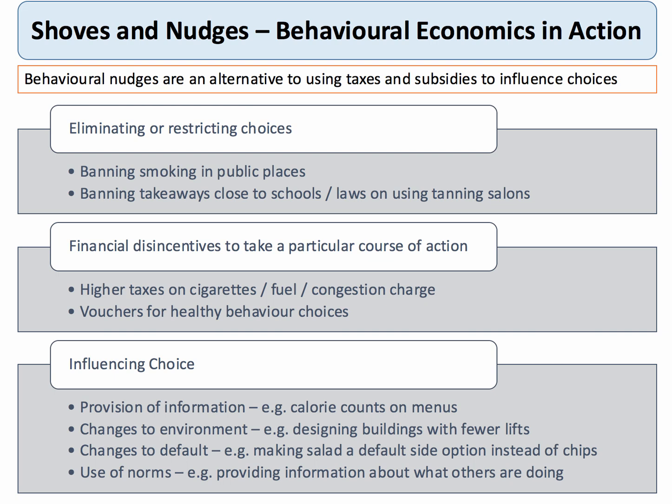Beyond taxes and subsidies, there is interesting economics in behavioral science and nudge theory. A nudge is an alternative to using a tax or subsidy. For example, banning smoking in public places — which happened a few years ago — was a way of eliminating a choice. This was arguably one of the most important health policy decisions of a generation and had a remarkable effect on health outcomes.